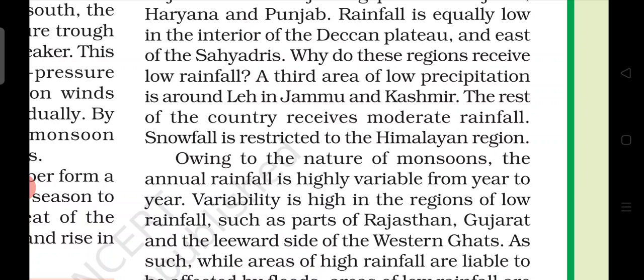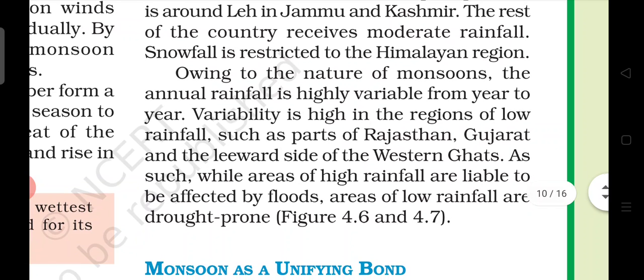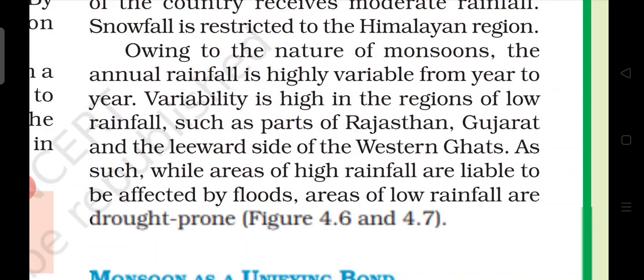Owing to the nature of monsoons, the annual rainfall is highly variable from year to year. The annual rainfall depends on how much moisture the monsoon has brought and what is the nature of the monsoon. The variability is high in the regions of low rainfall such as parts of Rajasthan.